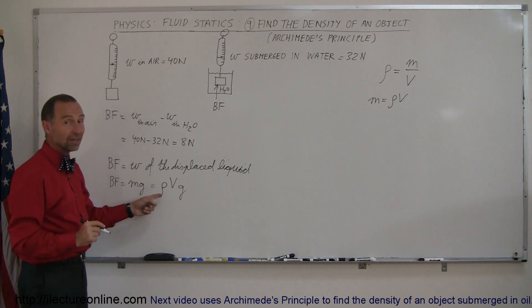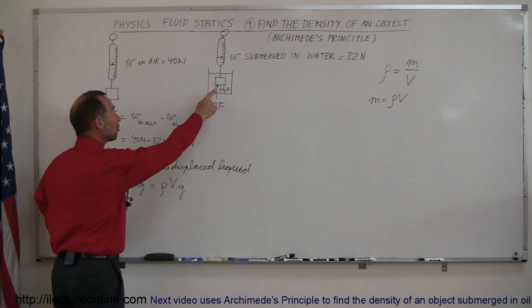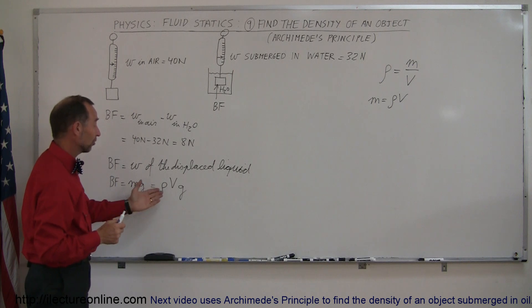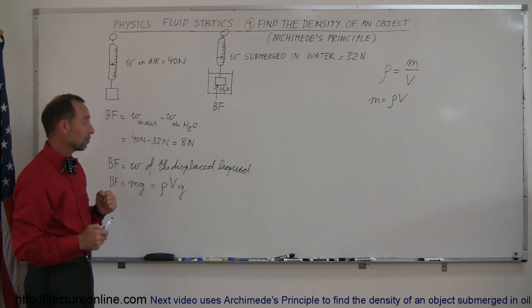Now, this is the density of the liquid, and this is the volume of the displaced liquid, which is also the volume of the object. And so if we can solve this for the volume of the displaced liquid, we can then also say that is equal to the volume of the object.